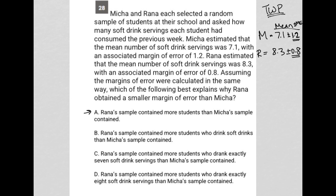Choice A: Rana's sample contained more students than Misha's sample contained. The question says Misha and Rana each selected a random sample of students — it doesn't tell us how many. So that could be it. Rana could have just asked more students, in which case you get a better sense of reality — what the real data is — by talking to more people. So I like that answer.